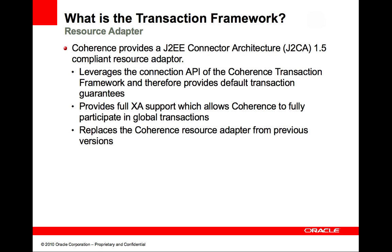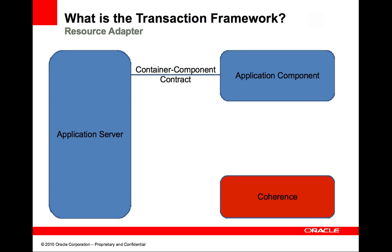Coherence includes a J2EE Connector Architecture 1.5 compliant resource adapter that is used to get connections to a Coherence cache. Since the resource adapter leverages the Coherence transaction framework, it provides the same transactional guarantees. In addition, it provides full XA support. This resource adapter replaces the previous version of the Coherence resource adapter. If an application needs to use Coherence as a transactional resource in a distributed transaction, it can do so through the Coherence resource adapter.